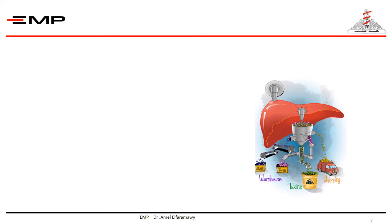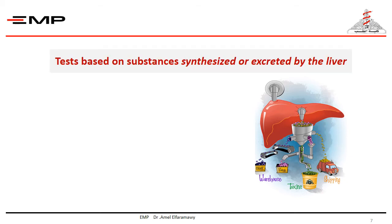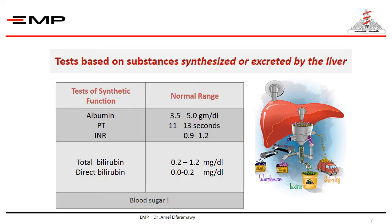The liver performs a lot of critical functions: synthetic, metabolic, storage, excretory, in addition to detoxification. In order to assess the function of the liver, we measure substances that are synthesized or excreted by the liver. These are the albumin, the INR — the international normalized ratio calculated from the patient's PT and compared to a standardized control as a reflection of clotting factor synthesis — and the bilirubin as a marker of the excretory functions of the liver. The maintenance of blood sugar level is also considered a function of the liver through glycogen synthesis and degradation, along with other hormones.